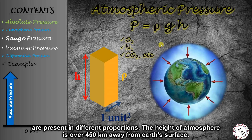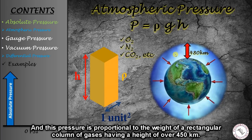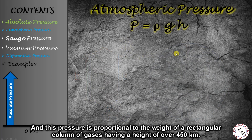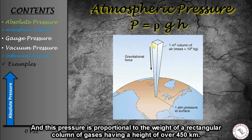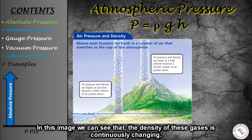The height of our atmosphere is more than 450 kilometers above the surface of the Earth. This means the gases in our atmosphere are continuously applying force on the Earth's surface. The pressure acts like a rectangular column with a height of more than 450 kilometers, and it uses the density of those gases and the gravitational force of the Earth, which is 9.8 meters per second squared. As we can see in this image, the density of atmospheric gases is continuously changing.